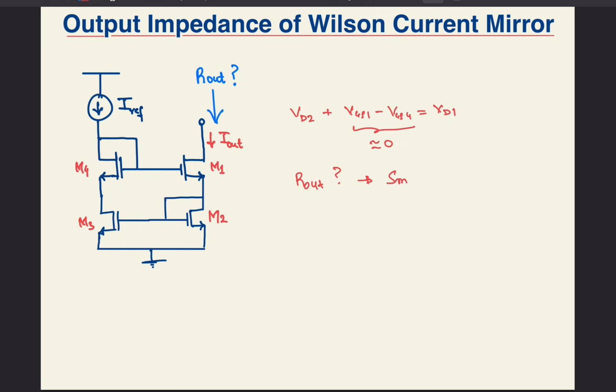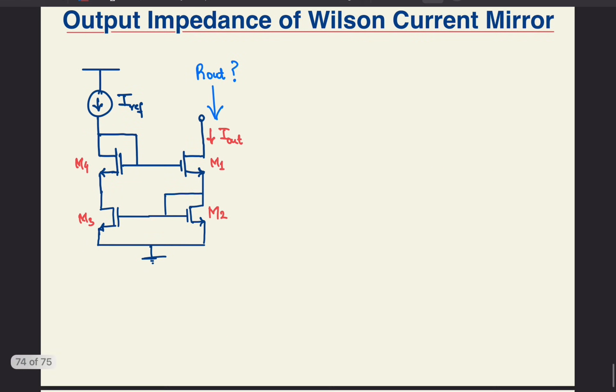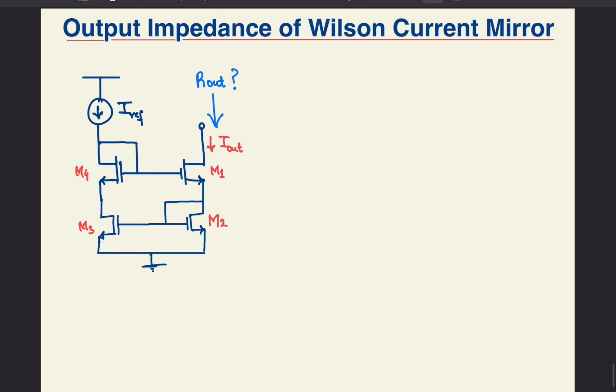The output impedance can be computed by drawing the small signal model and writing the equations for KVL and KCL. However, that would be a bit cumbersome for my liking. Let's see if there's an easier way. Can we actually use the results of what we already know to make our life easier? We just saw that the system has a negative feedback and M3 serves as a common source amplifier.